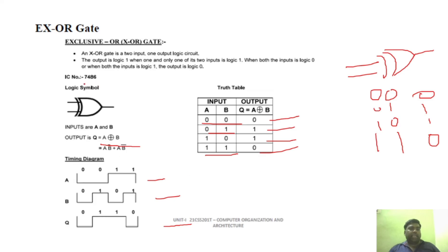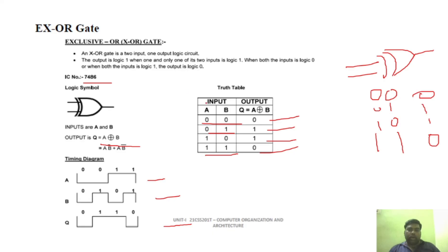The IC number 7486 can be used to realize the XOR gate.